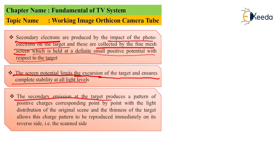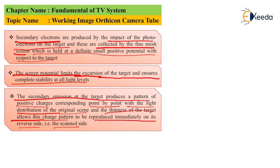The screen potential limits the excursion of the target and ensures complete stability at all light levels. The secondary emission at the target produces a pattern of positive charge corresponding point by point with the light distribution of the original scene, and the thickness of the target allows this charge pattern to reproduce immediately on the reverse side — that is, the scan side.